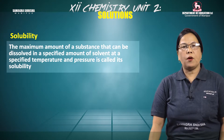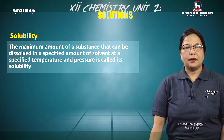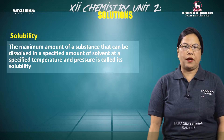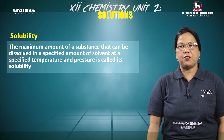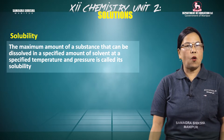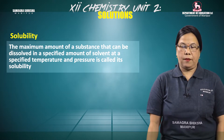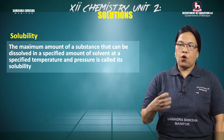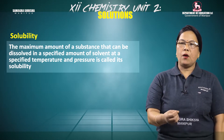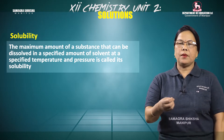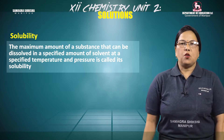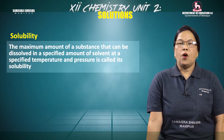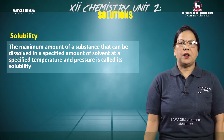The maximum amount of a substance that can be dissolved in a specified amount of solvent at a specified temperature and pressure is called its solubility. The maximum amount of solubility is called solubility.